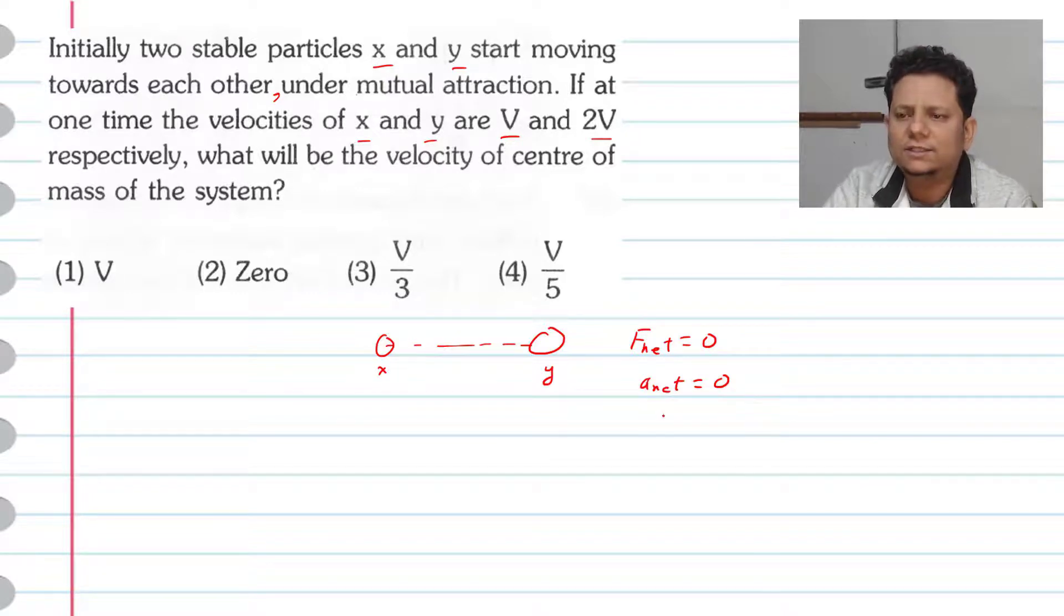Which implies the velocity of center of mass is constant. This means that if you have two particles at rest, then the center of mass location will be fixed.